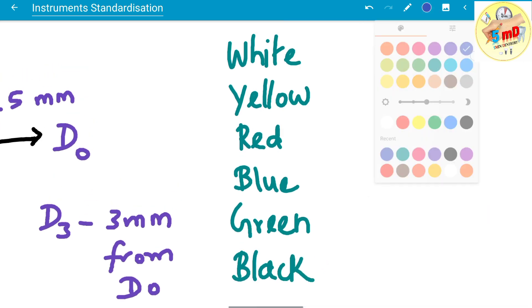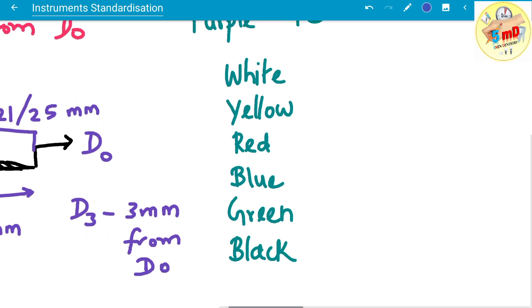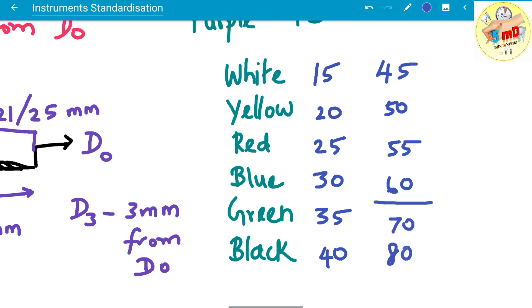So white, yellow, red, blue, and black repeats for every set of 6 instruments from 15 to 40, after which 45 to 60, and after which we saw there is a leap in 10s: 70, 80, 90 till 140.